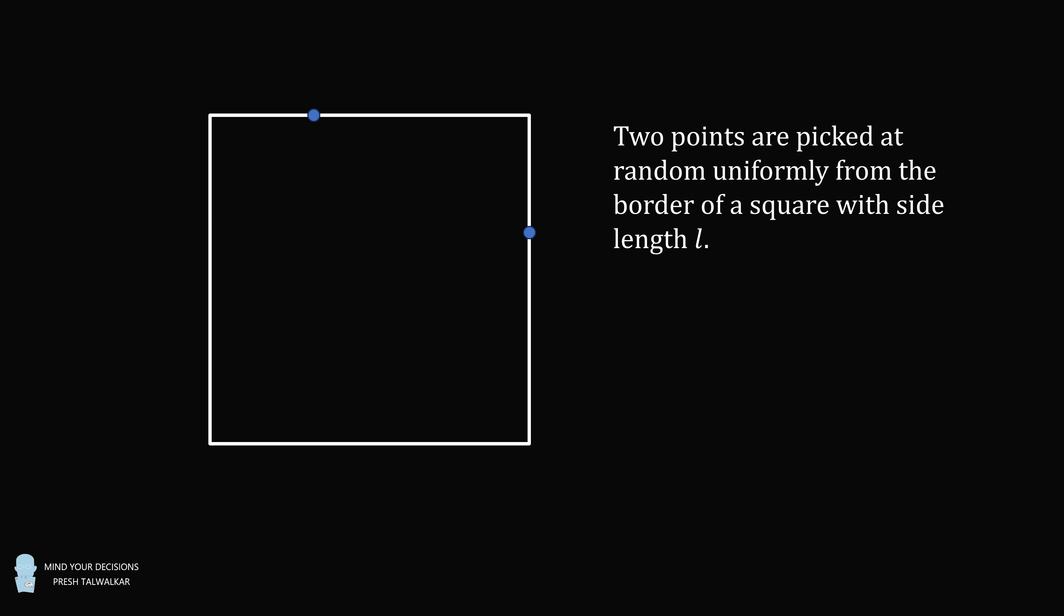Hey this is Presh Talwalker. Two points are picked at random uniformly from the border of a square with side length L. What is the probability the distance D between the points is larger than L?